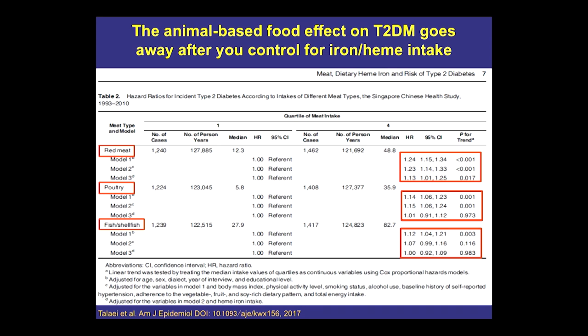Everyone says saturated fat is bad and red meat is bad. Well, red meat probably is bad, but not for the reasons you think. The reason is on this slide — there are many studies like this looking at hazard ratios for type 2 diabetes based on consumption of red meat, poultry, and fish. What you'll notice is that when you control for the iron and the heme — model 2 and model 3 — the effect goes down. So it might actually be the iron and the heme in the red meat, because iron and heme both cause oxidative stress, and that does cause disease.